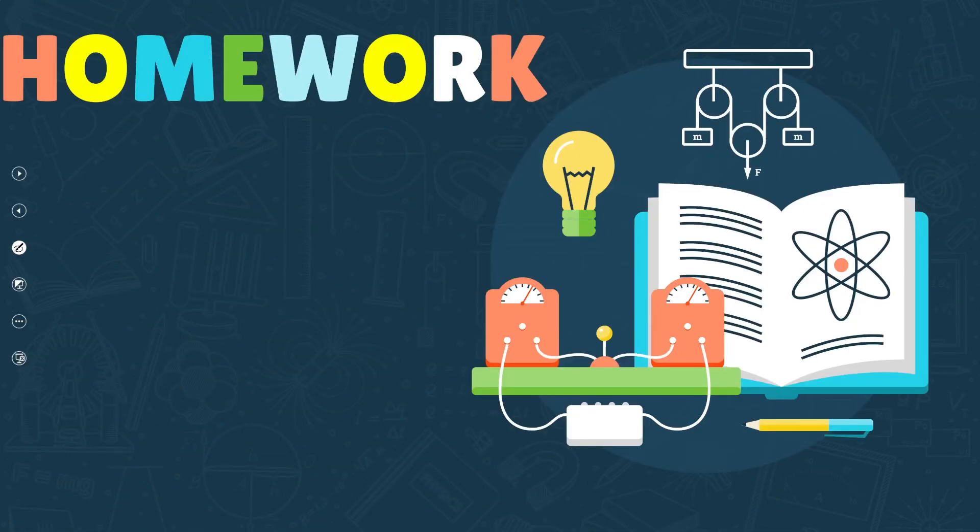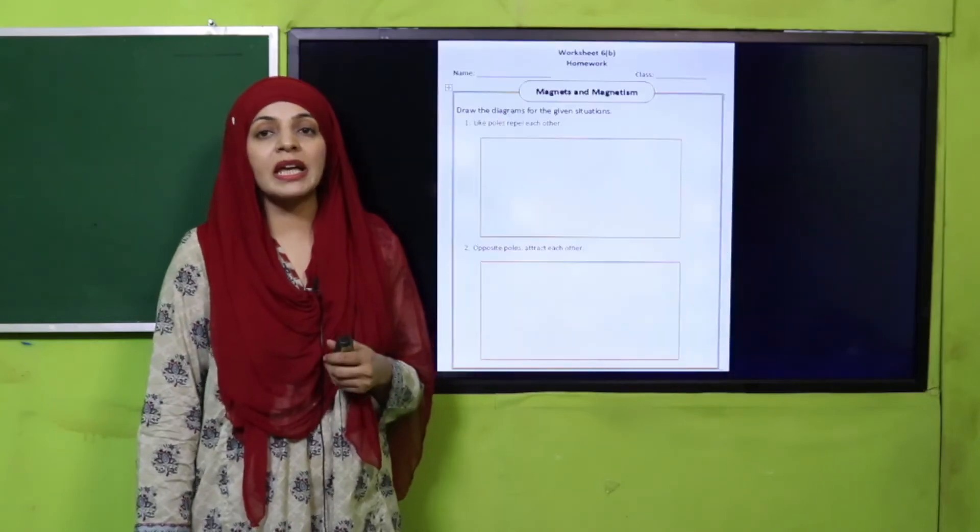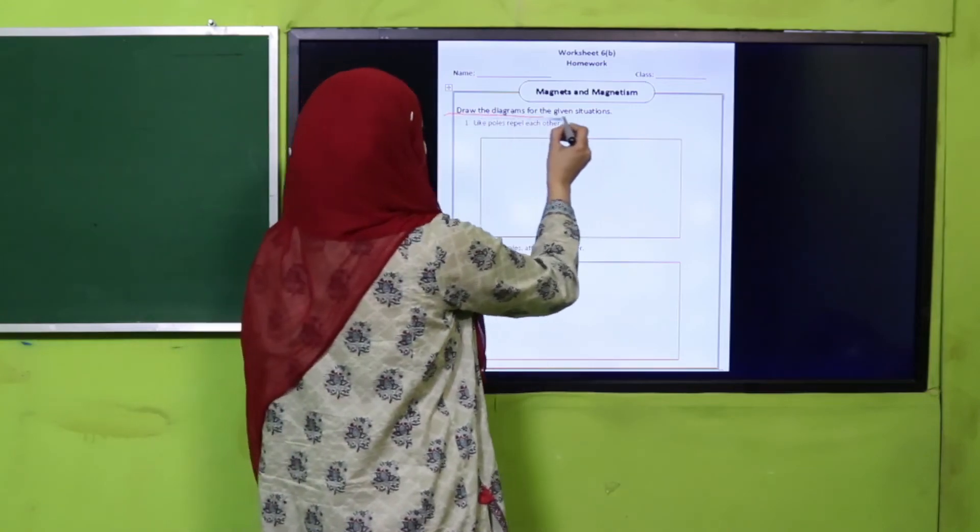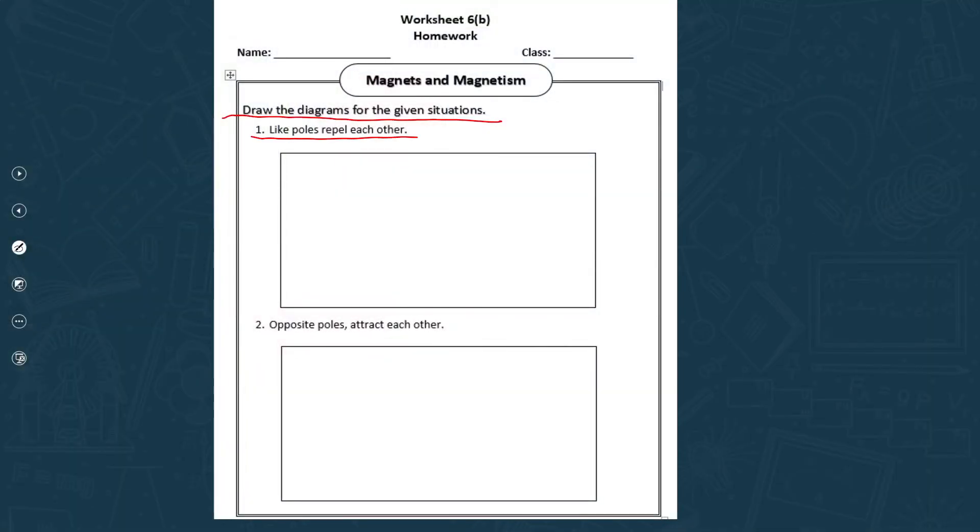Now is the time for homework. You have a very fun worksheet. For the given situations you will draw diagrams. Like poles repel each other - so draw two bar magnets with north and south, south and north, showing how they repel. Next, opposite poles attract each other - draw bar magnet opposite poles and show attraction. This is how you will draw the diagram. This will be your homework.